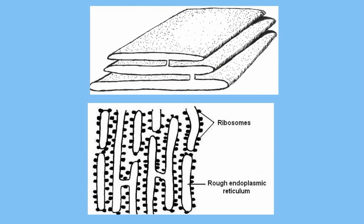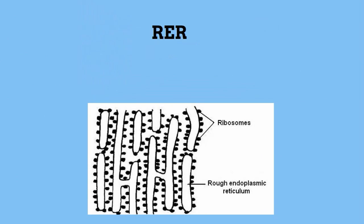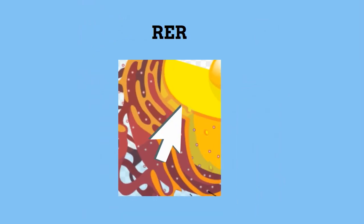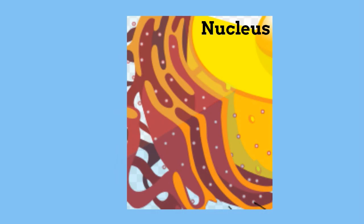Rough ER or RER is located very close to the nucleus. The rough ER gets its look because the tiny protein factories called ribosomes are embedded in its membranes. The rough ER produces proteins.